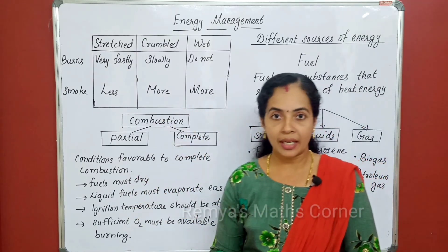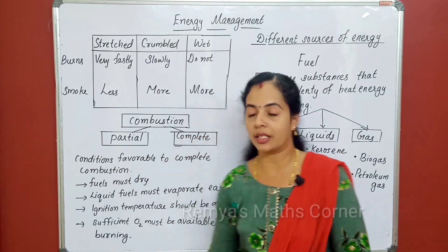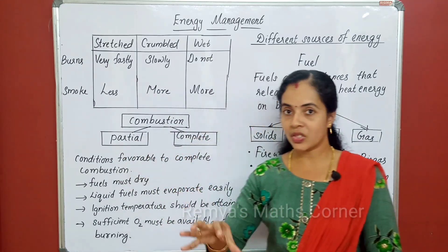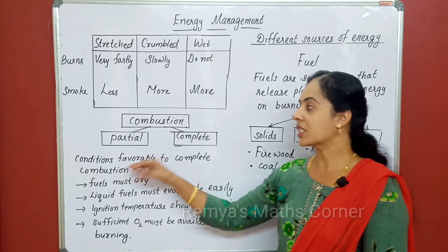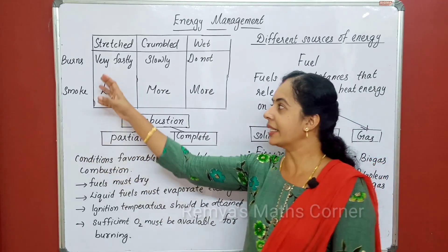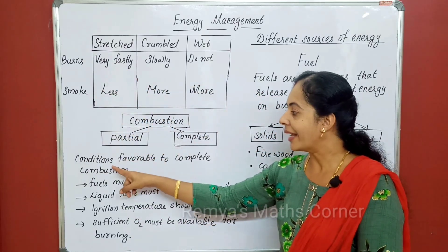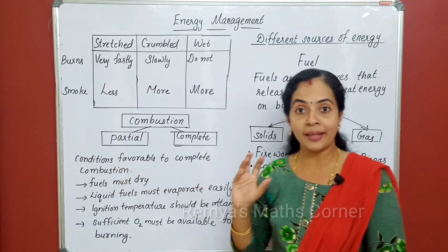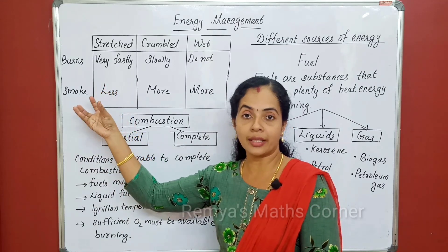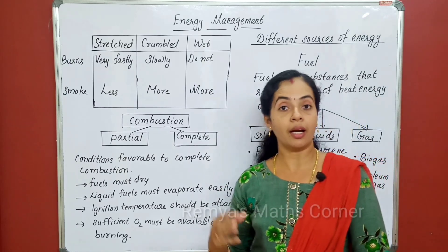There are two types of combustion: partial combustion and complete combustion. In complete combustion, the fuel burns fully. In partial combustion, the fuel does not burn completely. We need to aim for complete combustion.